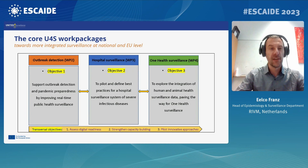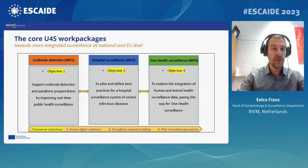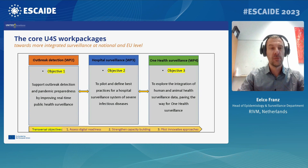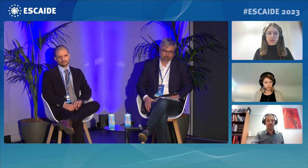Besides coordination, sustainability, and communication work packages, there are three core work packages: one on improving methods for outbreak detection; one on improving hospital surveillance to integrate more hospital data into routine epidemiological surveillance; and one on One Health surveillance integrating veterinary, environmental, and human health sectors. There will be subsequent presentations on outbreak detection and One Health surveillance.